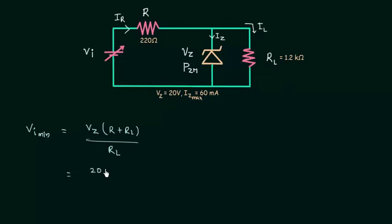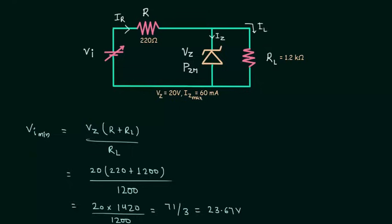So we have 20 inside the bracket. R is equal to 220 ohms. RL is equal to 1.2 kilo ohms, so we have 1200 ohms divided by 1200. 220 plus 1200 is equal to 1420 divided by 1200. When you solve this you have 71 divided by 3 and this is equal to 23.67 volts. So this is the minimum value of input voltage.